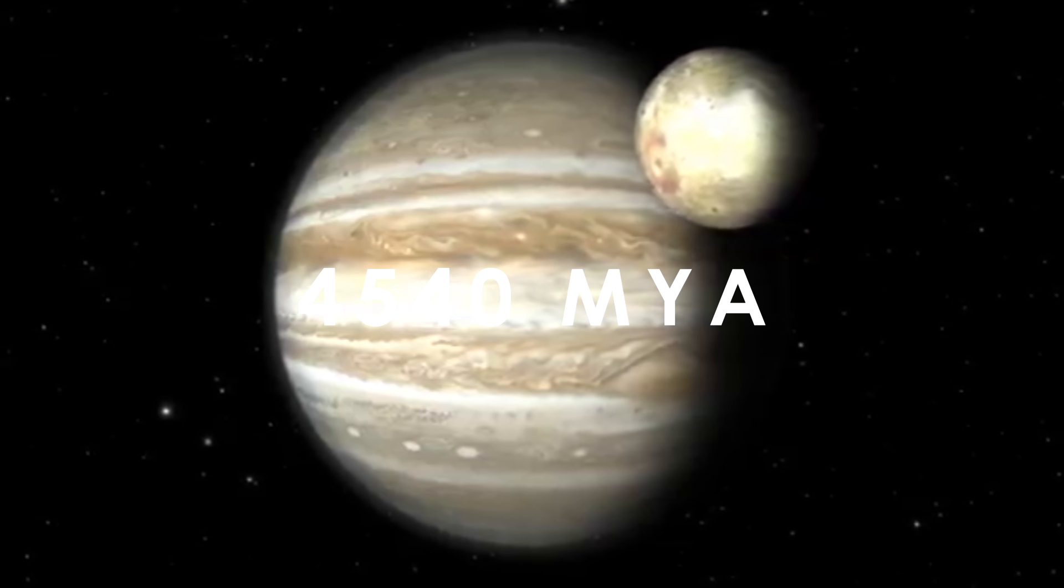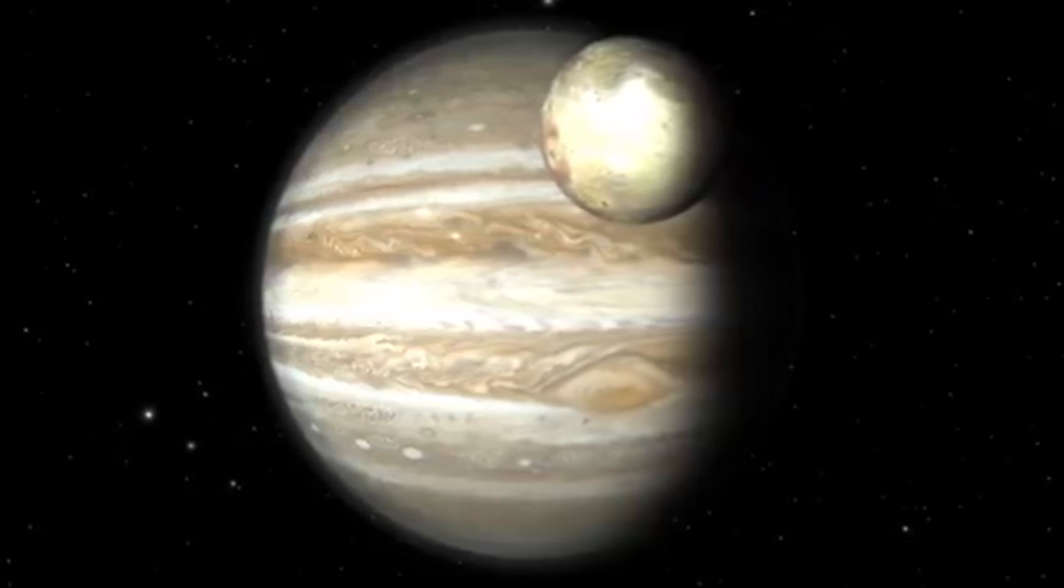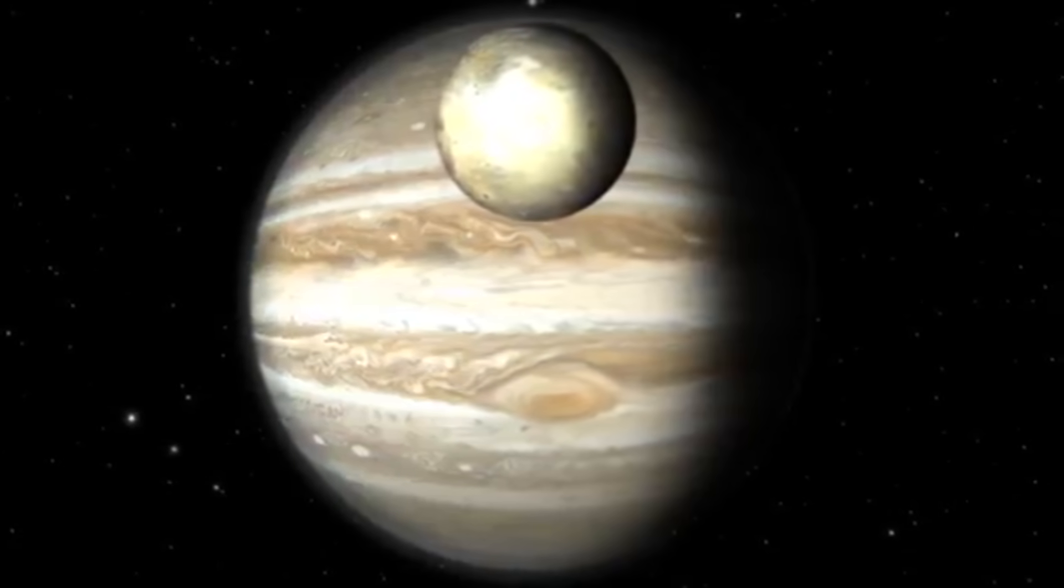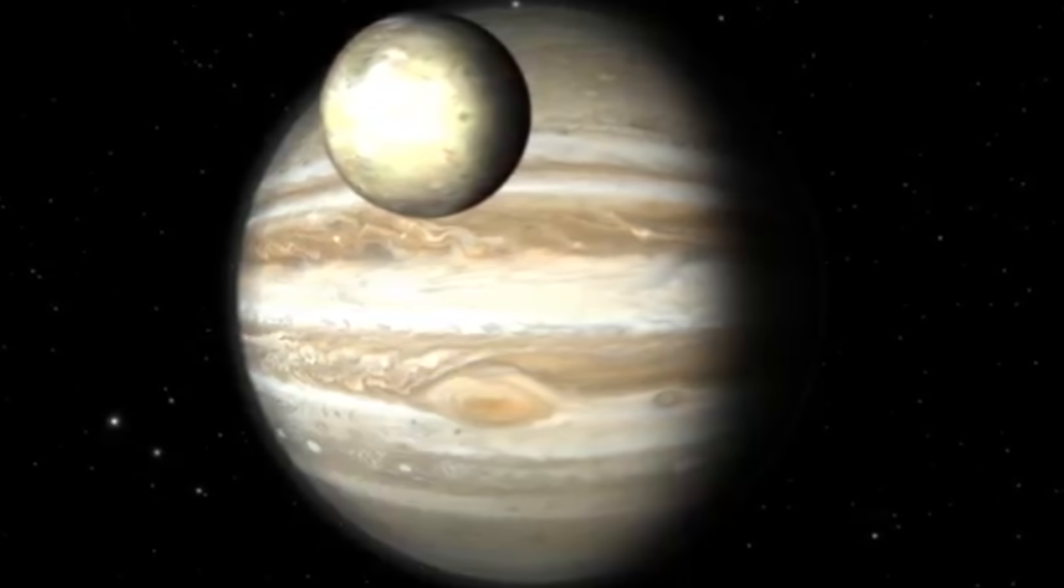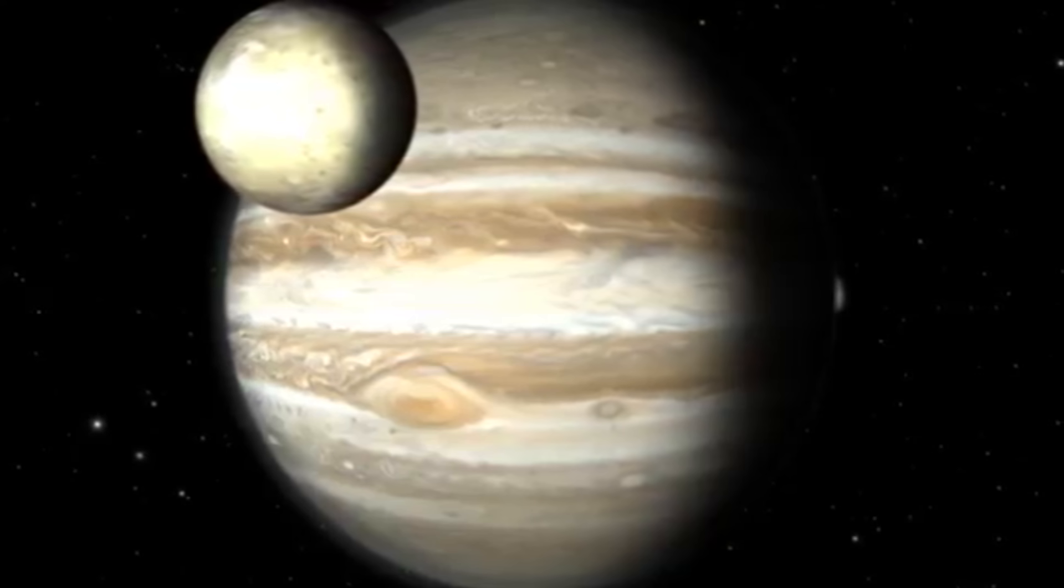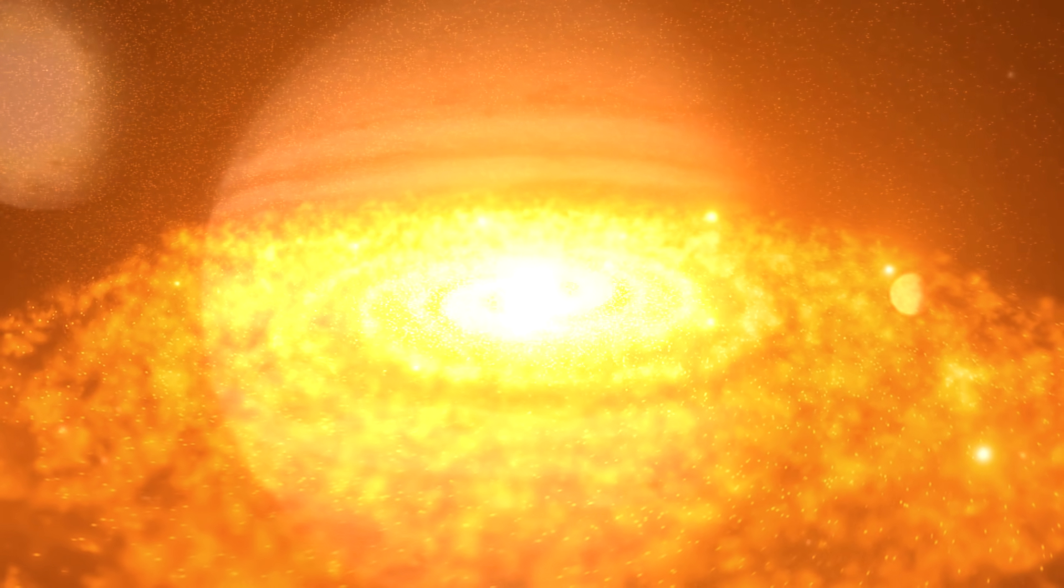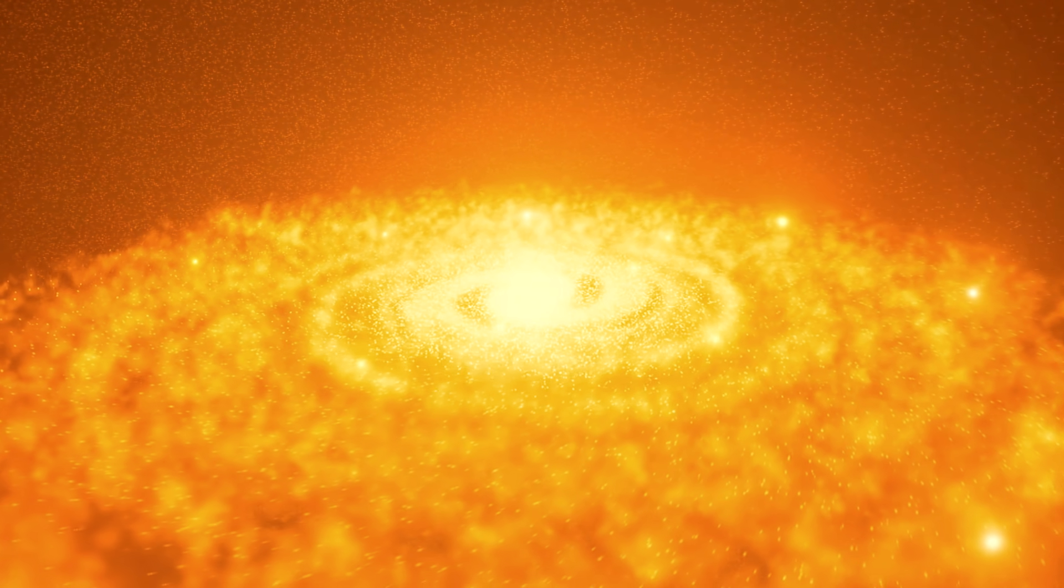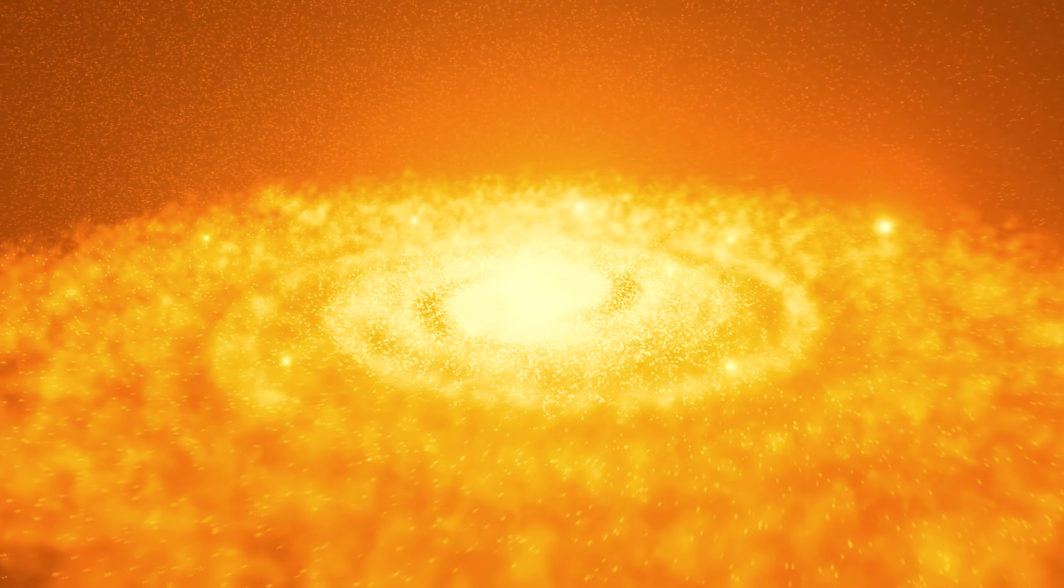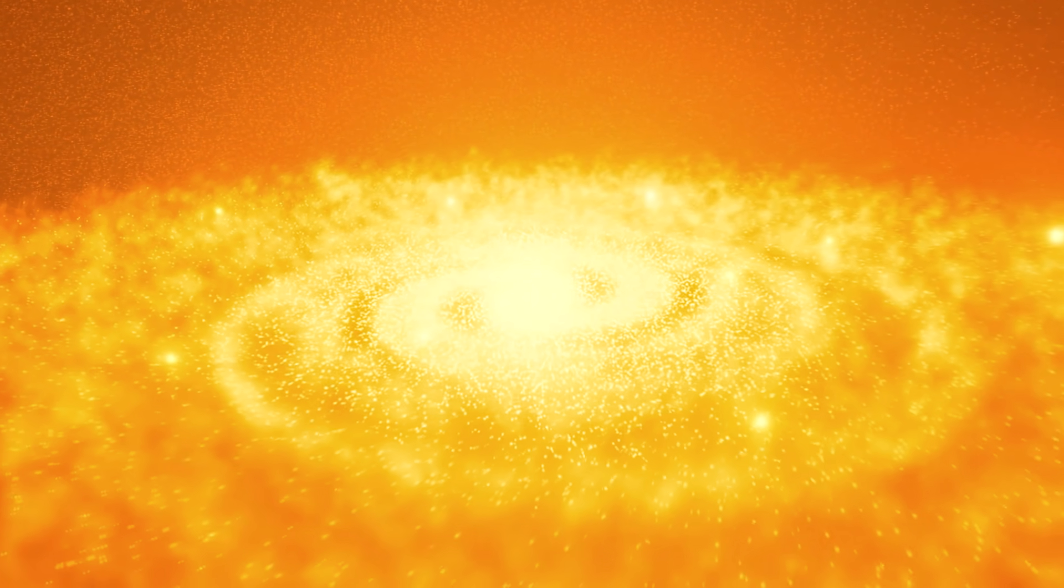Around 4.54 billion years ago, it is believed that Jupiter started migrating quickly inwards towards the Sun, approaching as close as 1.5 astronomical units before being halted by Saturn. This is known as the Grand Tack Hypothesis. This made the inner protoplanetary disk very thin, explaining among other things the small size of Mars.